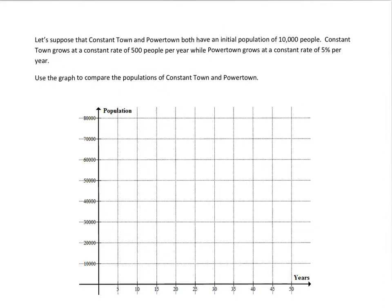To see yet another example of how linear and exponential growth are compared to each other, let's suppose that Constant Town and Power Town both have an initial population of 10,000 people. Constant Town grows at a constant rate of 500 people per year, where Power Town grows at a constant rate of 5% per year. So we will use the graph to compare the populations of Constant Town and Power Town.